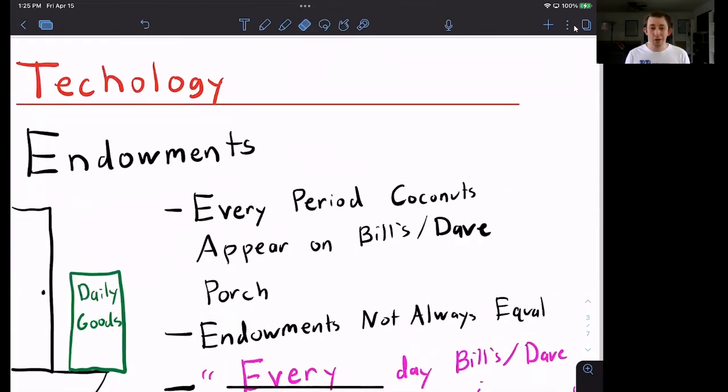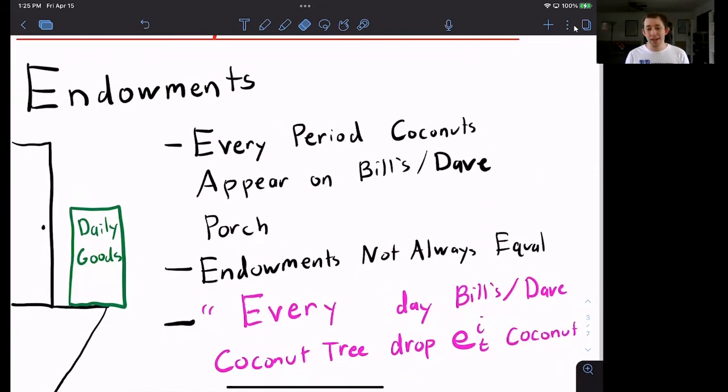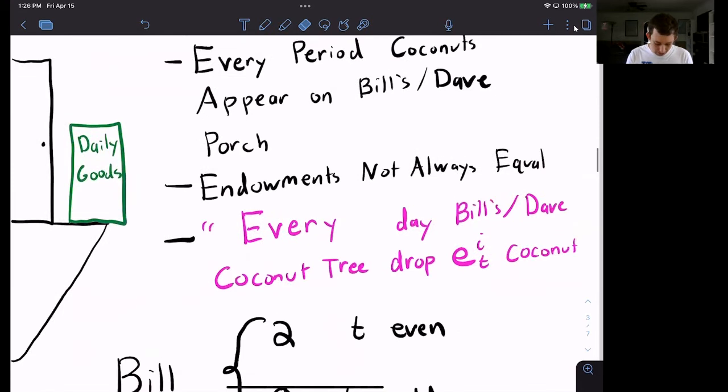We've still got endowments. So every period, we still have coconuts that are appearing on Bill's and Dave's porch. Endowments are not always equal. And you can keep thinking about this like every day, Bill and Dave, they each own a coconut tree. And every day, their tree drops some amount e_it number of coconuts.